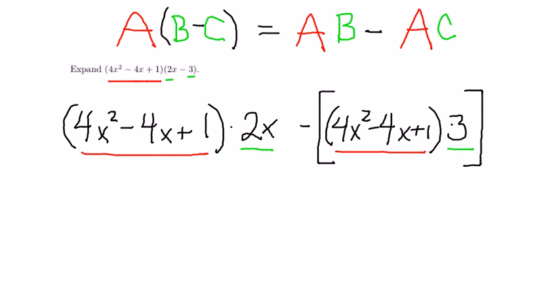Now, we have a simpler distribution problem, which is simply to match the 2x with the 4x squared, the 2x with the 4x, the 2x with the 1. Likewise, we're going to match the 3 with the three terms inside of the parentheses next to it.